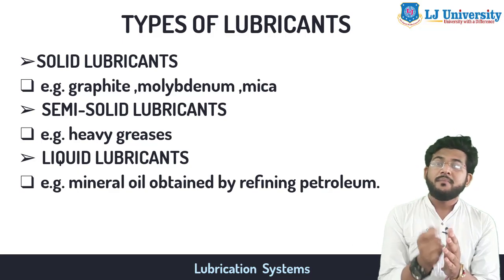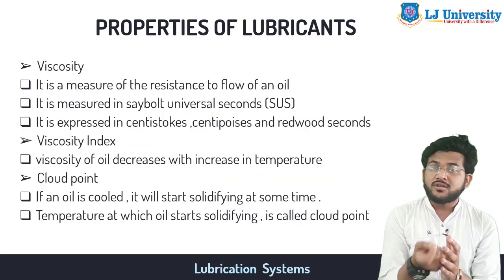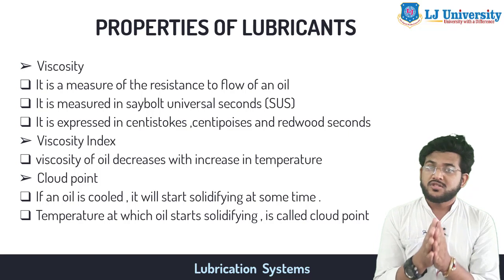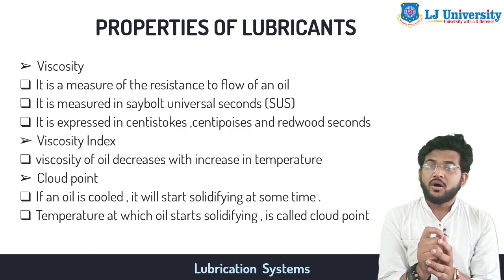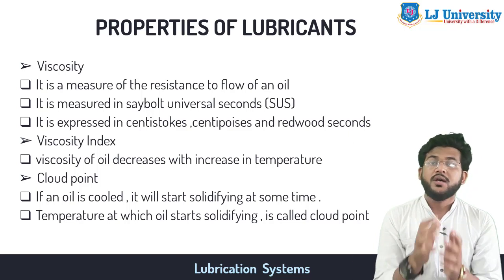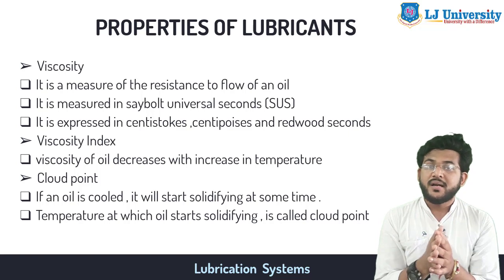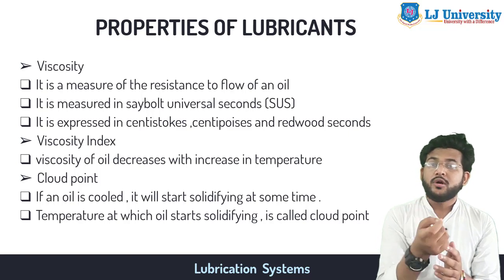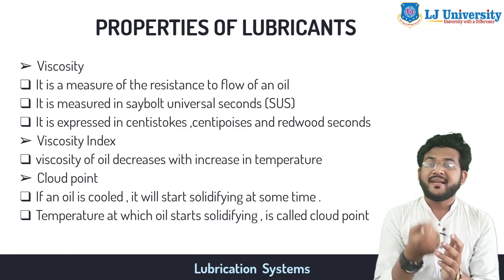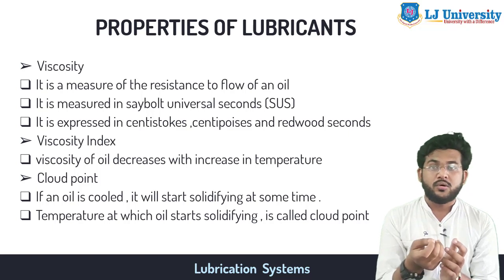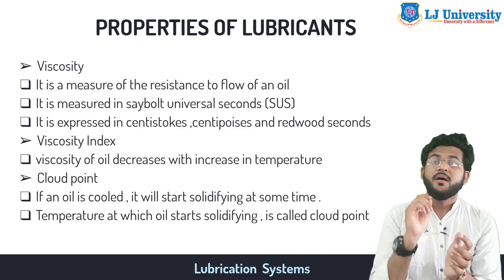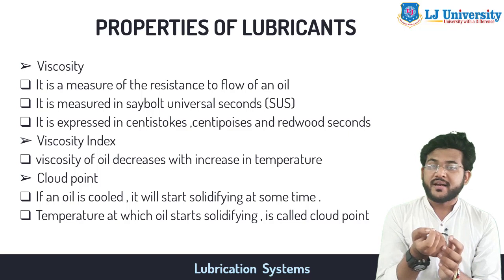Now let us see the basic properties that a lubricant must have. First is viscosity — the measure of the resistance to flow of the oil. It is measured in a Saybolt viscometer and expressed in centistokes or centipoises. It is also sometimes expressed in Redwood seconds.